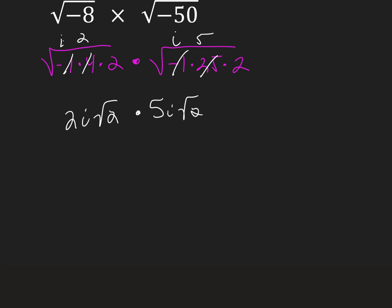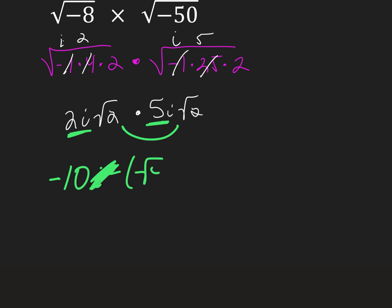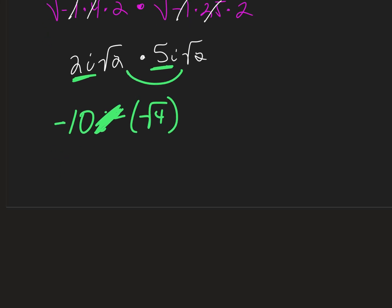So now we can go ahead and multiply the stuff on the outside. 2i times 5i gives me 10i squared. As soon as I see that i squared, I cross it off and change the sign. Then I have the square root of 2 times the square root of 2, which is the square root of 4. The square root of 4 is 2, and I multiply that by negative 10. My answer is negative 20.